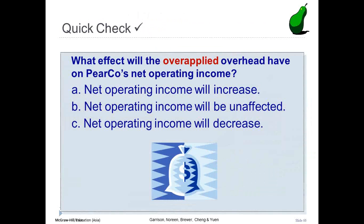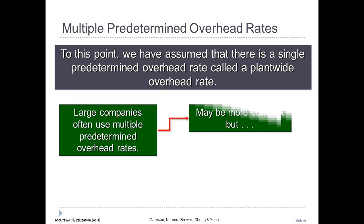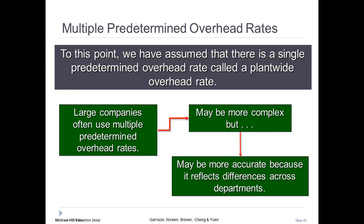Let's check our knowledge: what effect will the over-applied overhead have on PairCompany's net operating income? The net operating income will increase. Many large companies use multiple predetermined overhead rates, which creates more complexity but promotes greater accuracy in the allocation process by reflecting differences across departments in how overhead costs are incurred.